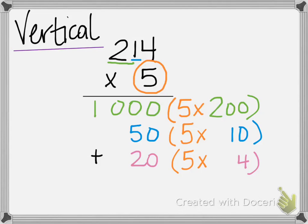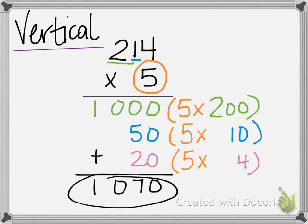1,000 plus 50 plus 20 is 1,070. One thing to keep in mind with this method is to make sure that the digits in the ones place line up, the digits in the tens place line up, hundreds, and finally thousands.